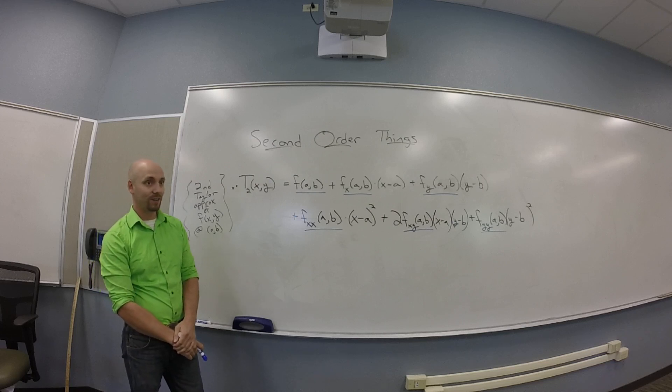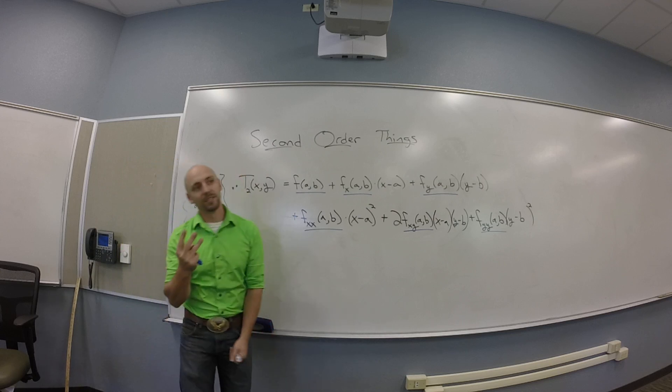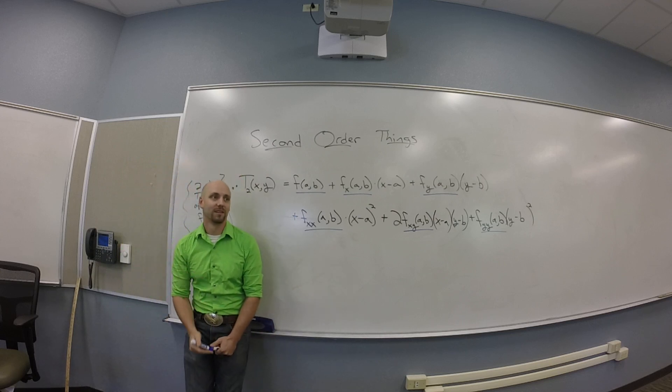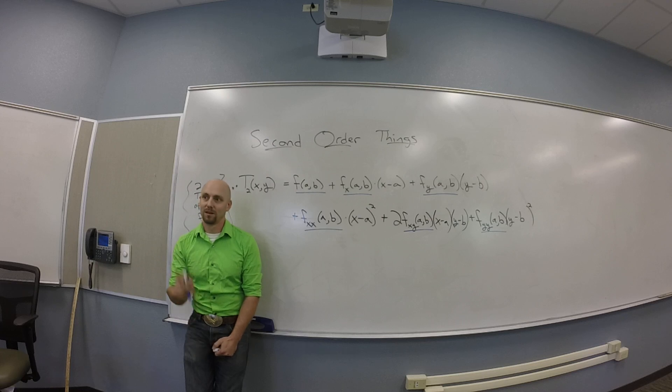And then what's the highest degree of a variable I get? Yeah, there's some variables squared in there. So there's three second order variables represented here. What are they? X squared, Y squared, and XY. Perfect.